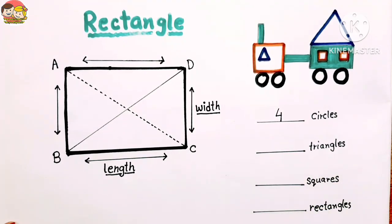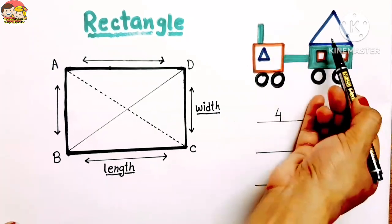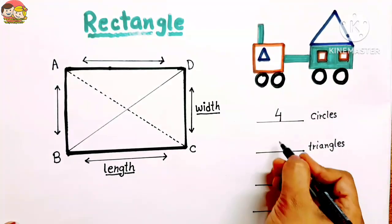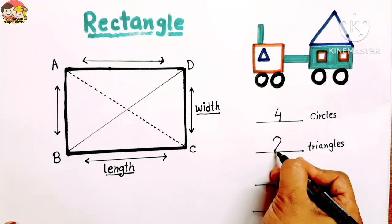Next, triangles. How many triangles are there? Let's count: 1, 2. So there are 2 triangles.